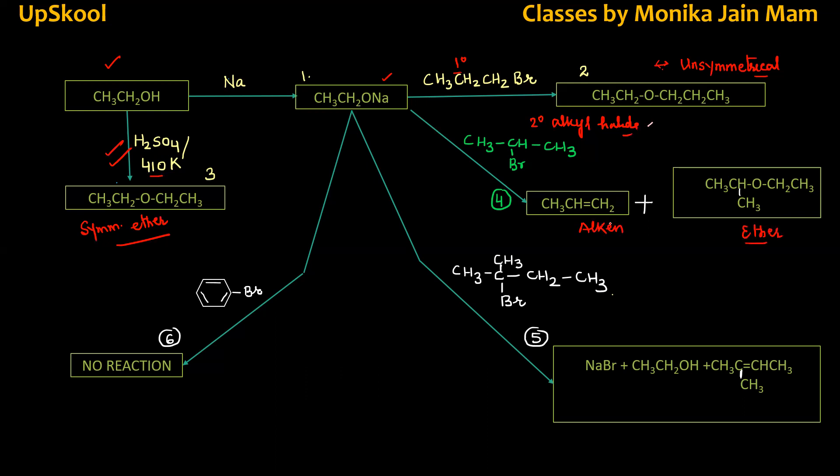Alkene will be comparatively major. So here this halogen is replaced by this alkoxy group, nucleophilic substitution. If you take tertiary alkyl halide, the major product formed or only product formed is alkene along with sodium bromide and acidic H is taken by CH3CH2.